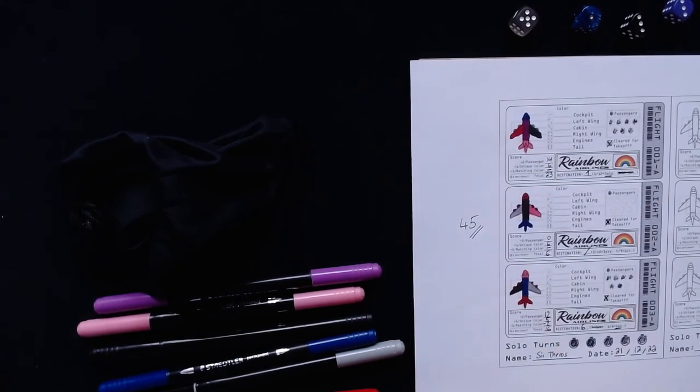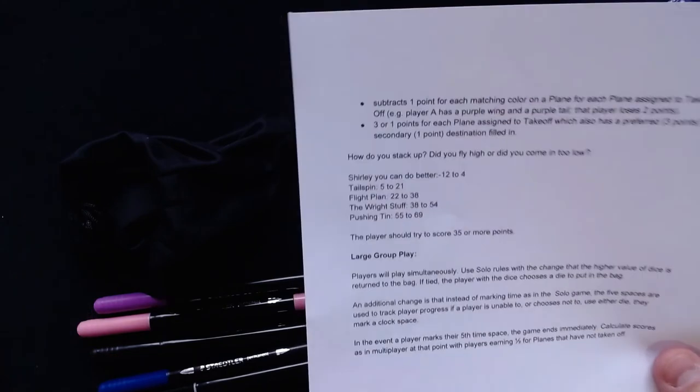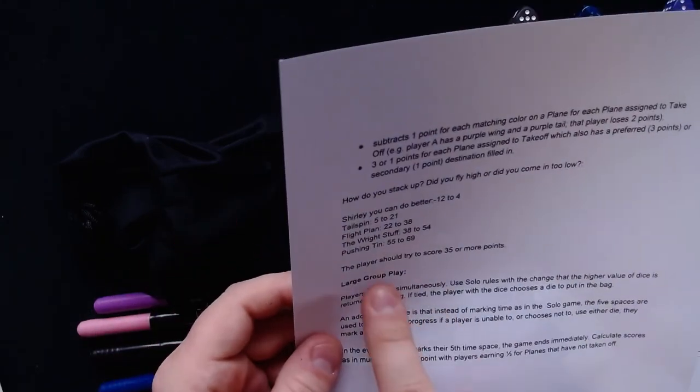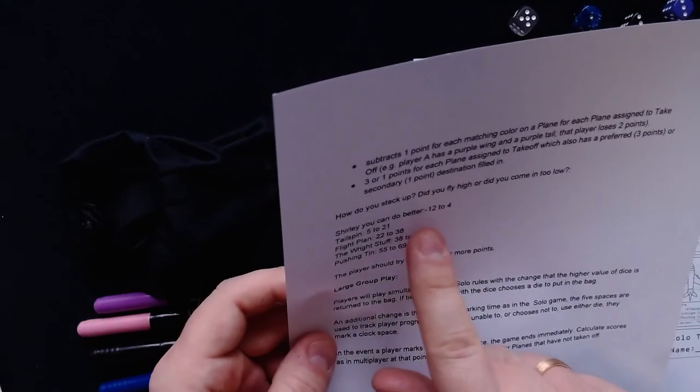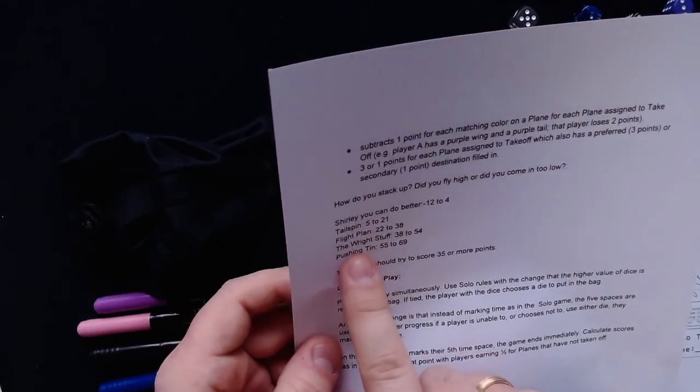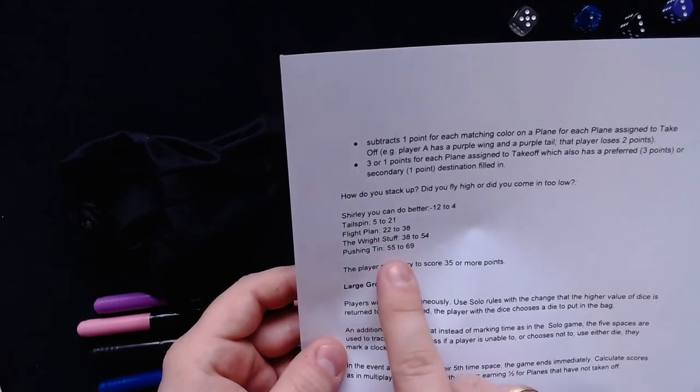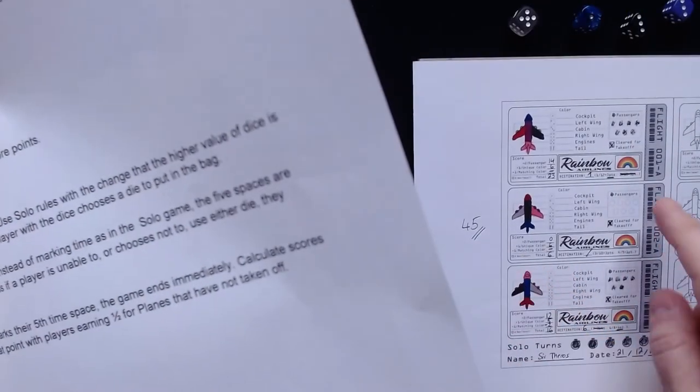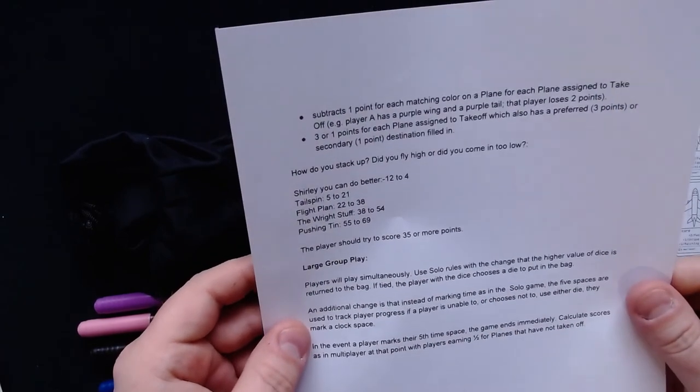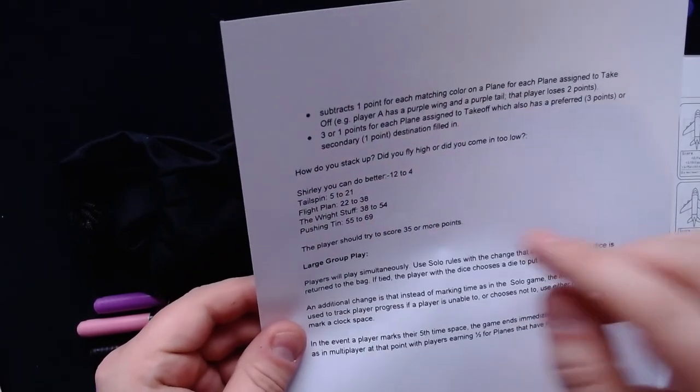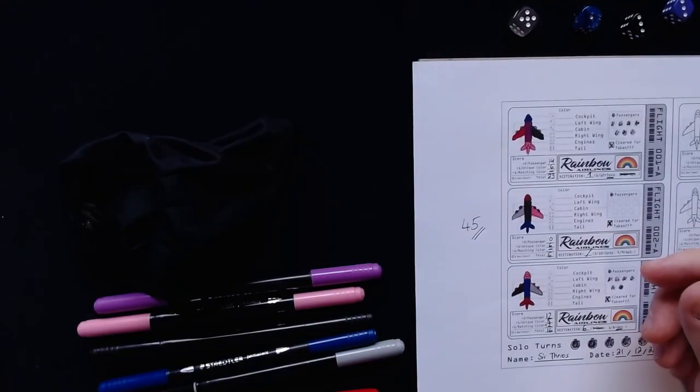And if I look at the, so this is also a prototype by the way. This is a prototype game sheet and prototype rules I got. But in the prototype rules, it says the player should try to score 35 or more points, which we did. So you see here, we have 45 points, which is the right stuff here. So that's pretty okay. If we had 55 points, which we could have gotten if we had gotten a few passengers here, then we could have had the highest score here. But I think 45 is pretty good. That's the second best rank here. That's pretty okay. All right.